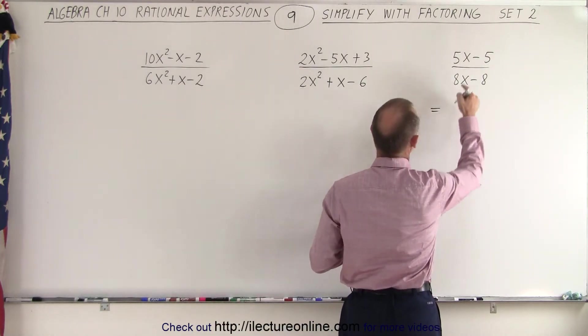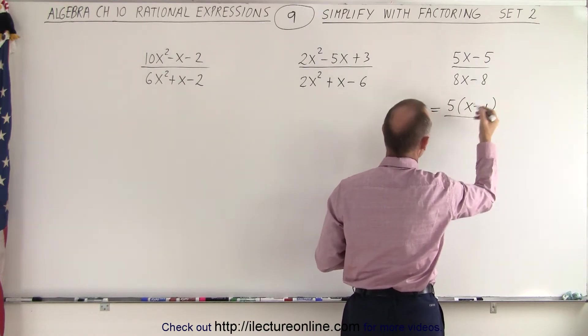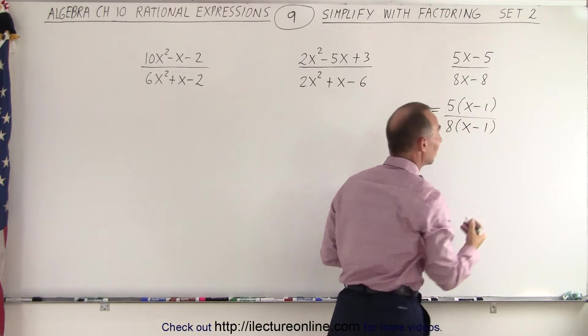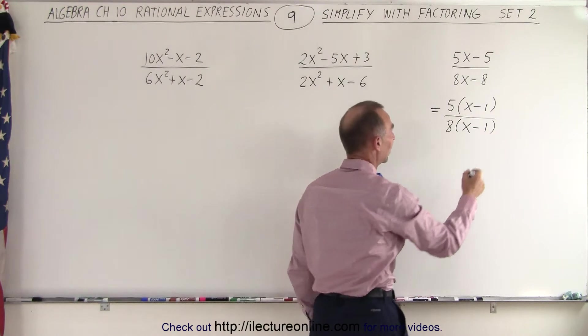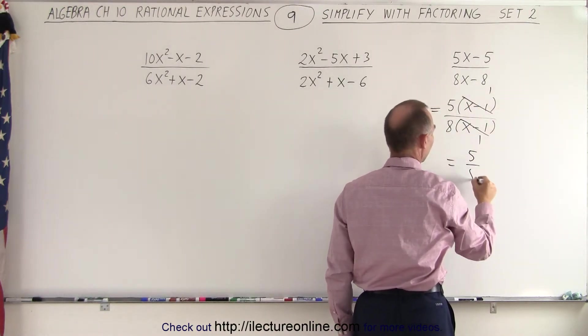So in the numerator, we can factor out a five. We're left with an x minus one. And in the denominator, we can factor out an eight. And we're again left with an x minus one. And then you realize, yes, the numerator and denominator do have a common factor. So we can simplify that, and we're left with five divided by eight.